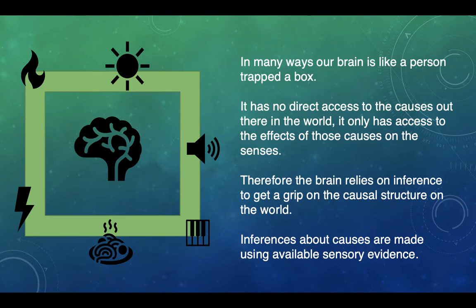Now let's just have a look at some of the origins of the theory, some of the initial foundations of the theory. And in this it posits that in many ways our brain is like a person trapped in a box, which I've tried to show here with my rubbish diagram. It has no direct access to the causes out there in the world. It only has access to the effects of those causes on the senses. So in this example, something falling on the ground and making a loud sound. When we hear it, we get the effect of the cause on our senses in terms of the sound on our auditory system.